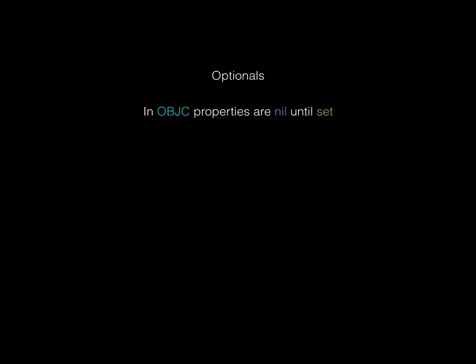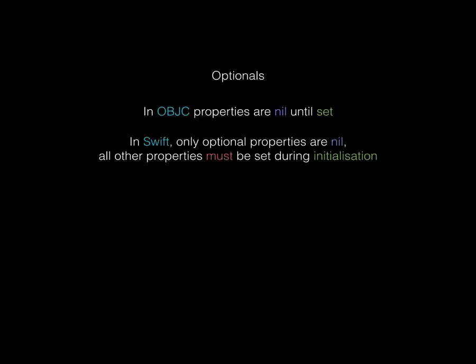Optionals are perhaps the most confusing thing and will make you hurt yourself when you first try Swift. In Objective-C, all properties were nil and sending a message to nil gave silent failure — great when you wanted optional behaviour, but very hard to detect bugs when things went wrong. That is not at all how it works in Swift.